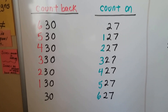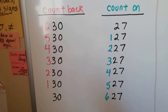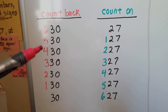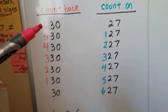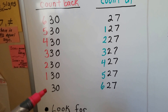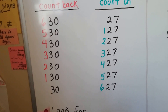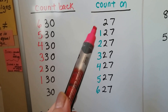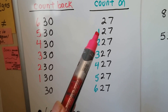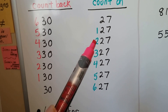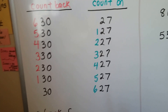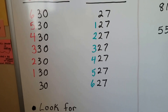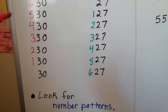When counting back by hundreds, the tens and ones stay the same because we're only moving the hundreds. We're counting back by hundreds, so only the hundreds change and they get smaller — one less each time: six, five, four, three, two, one. Instead of writing a zero, we just write 30, which is one less hundred than 130. When counting on, we can even start where there are no hundreds and add a hundred each time: 127, 227 — the tens and ones stay the same.